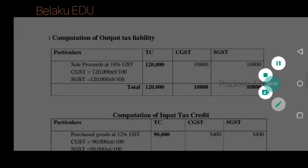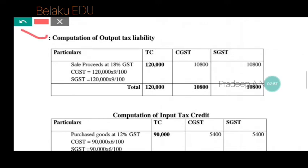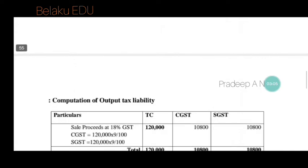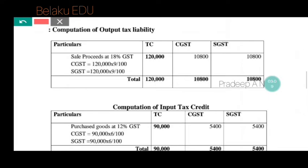First step: calculate the output tax liability. Sales proceeds made by Mr. Mahesh are rupees 1,20,000, on which he collects 18% GST. Since this is an intra-state supply, the 18% GST is split equally into CGST and SGST — 9% each. So CGST = 1,20,000 × 9% and SGST = 1,20,000 × 9%.